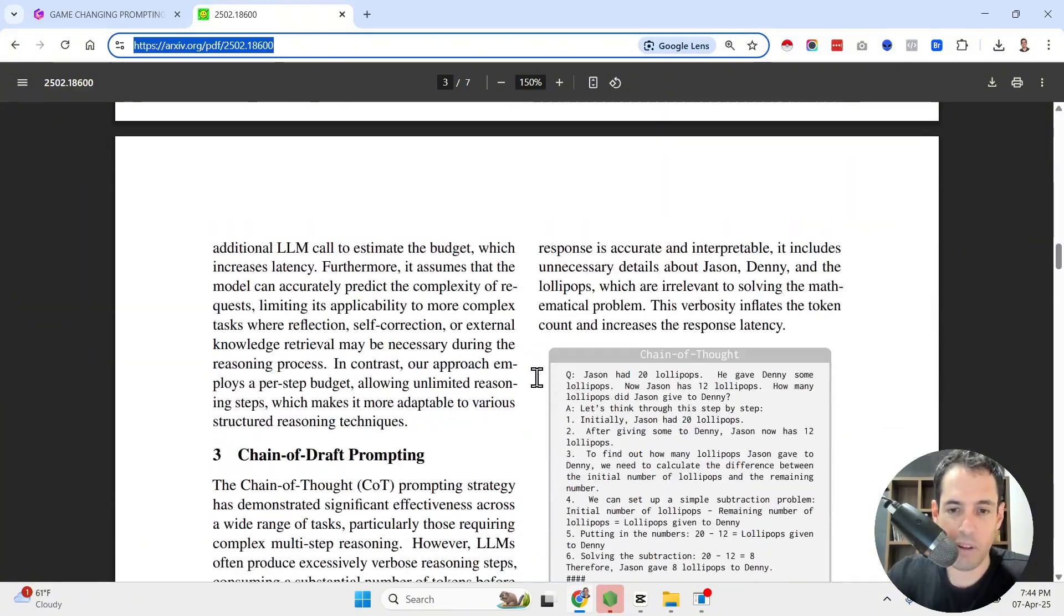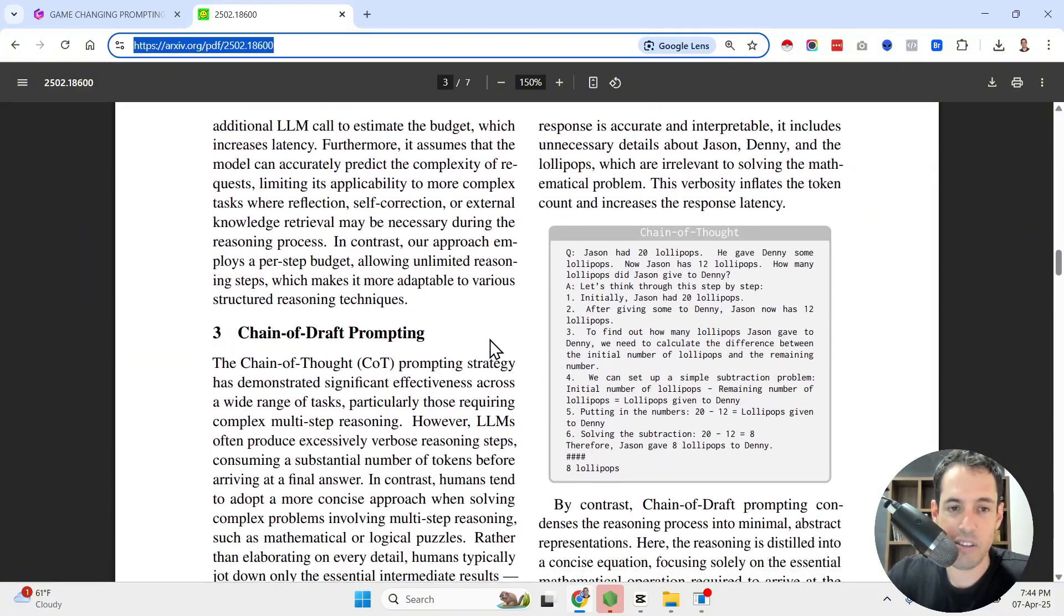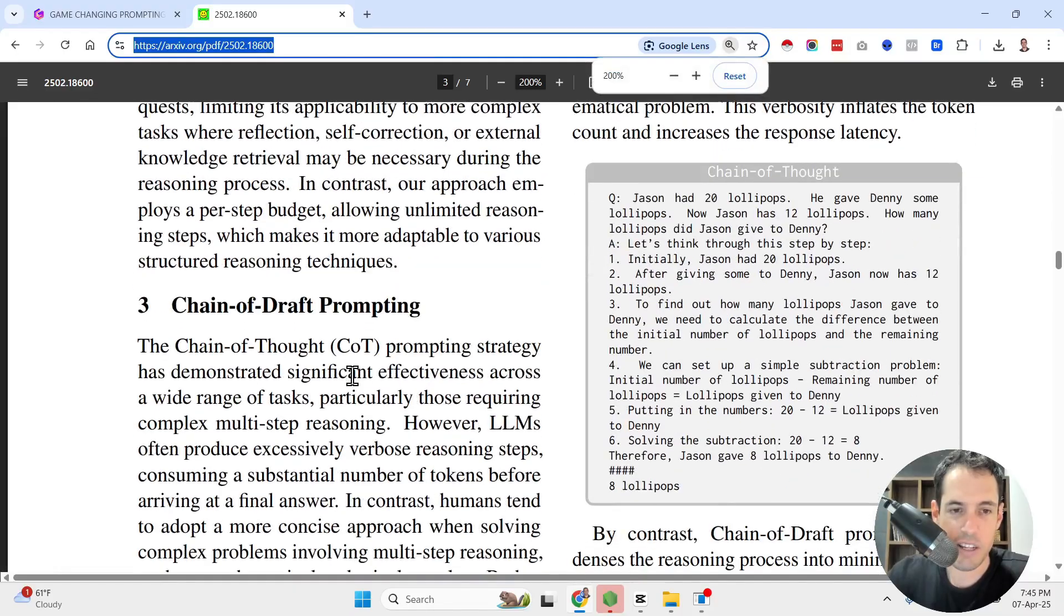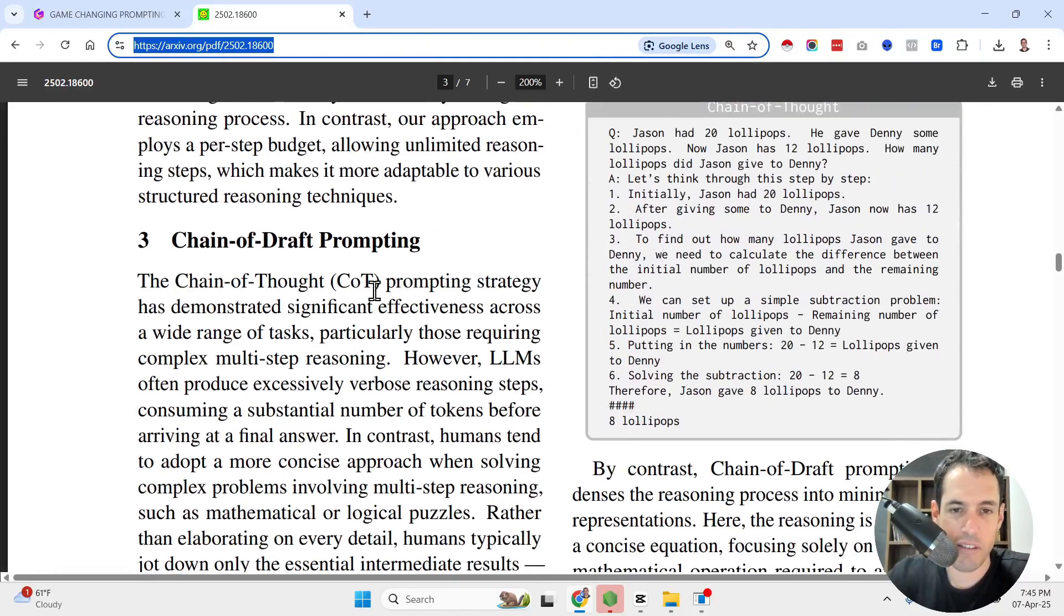Now, in this research paper, what the team has done, they introduced a new type of prompting, which is called chain of drafts. Now, they discussed a bit what is chain of thought. As we said, it's a prompting strategy that demonstrated significant effectiveness across a wide range of tasks. However, LLMs often produce excessively verbose reasoning steps, consuming a substantial number of tokens before arriving at the final answer, like I said.